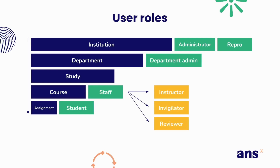It's also possible to give students these yellow course roles. This is usually done in the form of student assistants or PhD students. Students will have their own student rights in their own courses, but can have an instructor, invigilator, or reviewer role in another course.